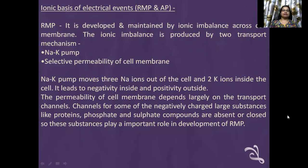Ionic basis of resting membrane potential. Resting membrane potential is developed and maintained by ionic imbalance across the cell membrane. The ionic imbalance is produced by two mechanisms: first, the sodium-potassium pump; and second, selective permeability of cell membrane. The sodium-potassium pump moves three sodium ions out of the cell and two potassium ions inside the cell, leading to negativity inside and positivity outside. The permeability of the cell membrane depends largely on transport channels; channels for negatively charged substances like proteins, phosphate, and sulfate compounds are absent or closed, so these substances play an important role in development of RMP.